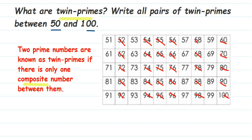Now we check the remaining numbers. Is 51 prime? No, 51 is composite because it goes in the three-times table. What about 53? 53 is a prime number, so let me mark it in blue. Next is 57 — 57 goes in the three-times table, so 57 is composite. Let me cross that out.